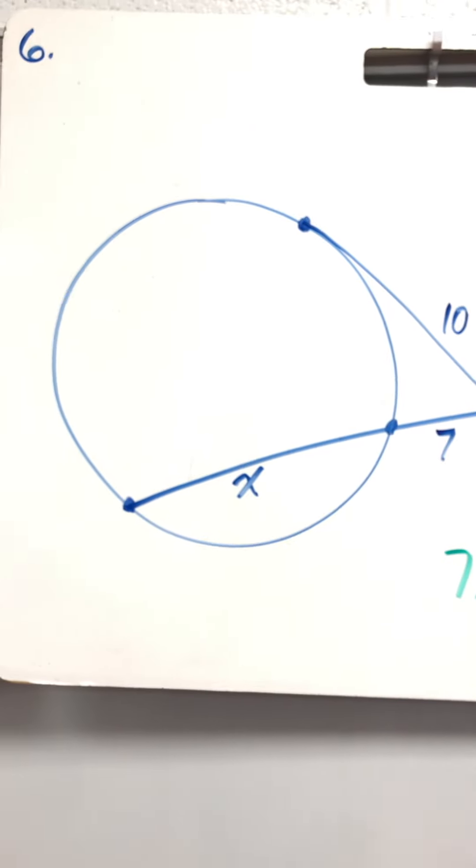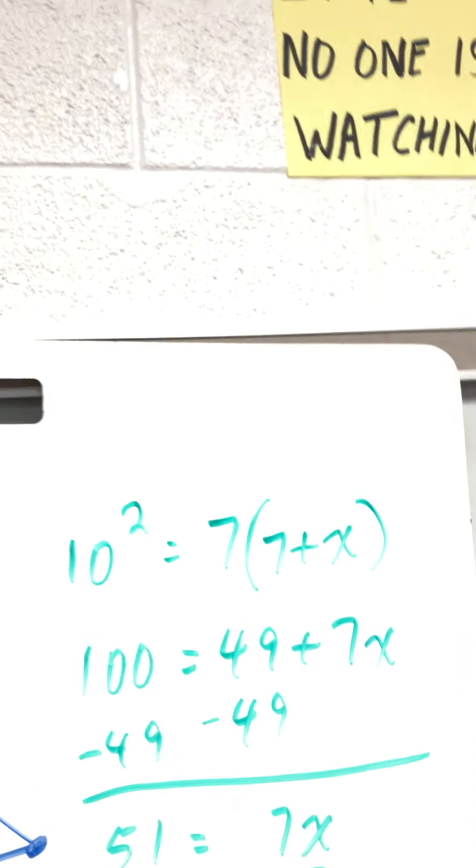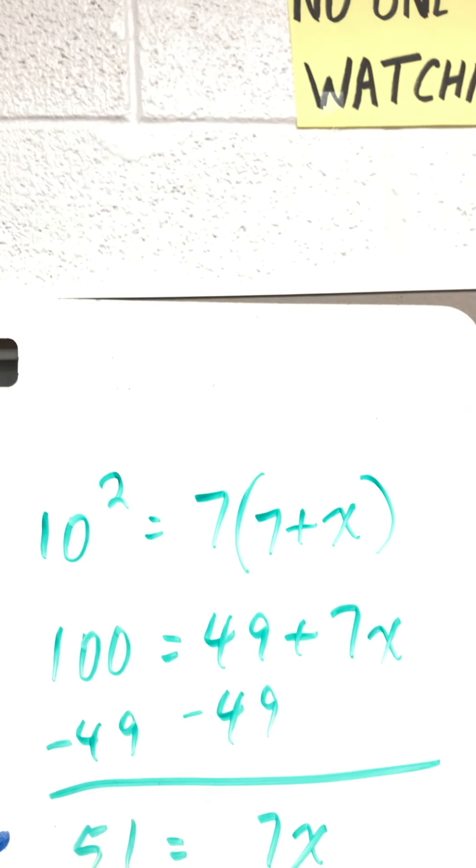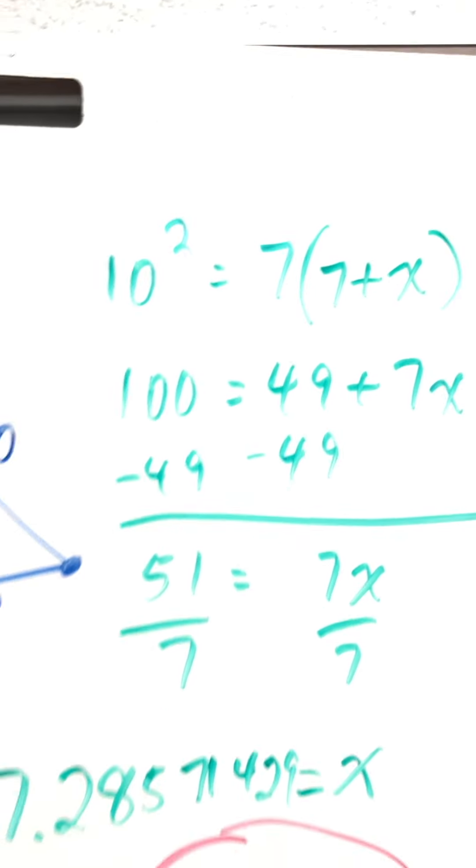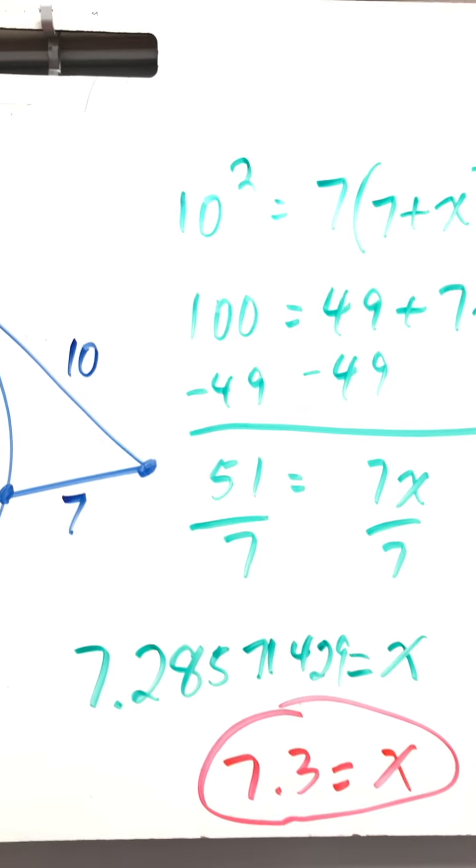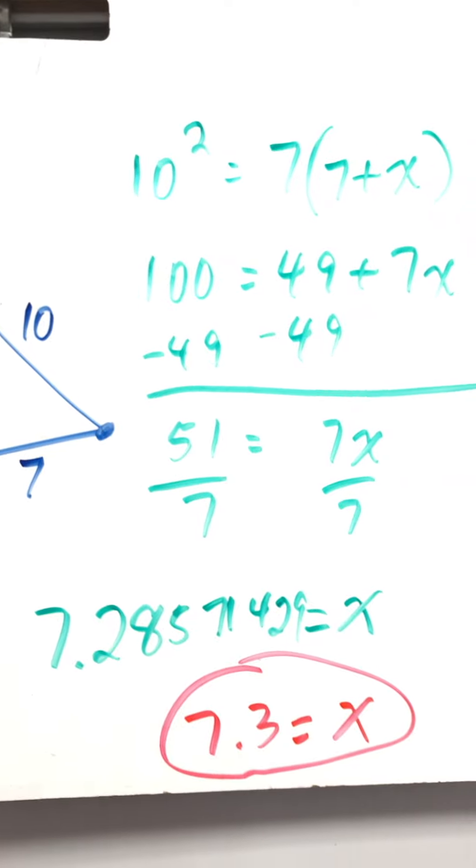10 squared equals 7 times 7 plus X. Distribute the 7. Subtract 49 from both sides. Divide by 7. You get 7.28 repeating. Round to 7.3.